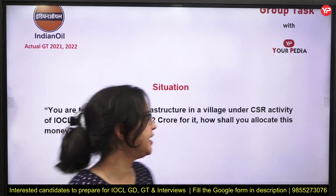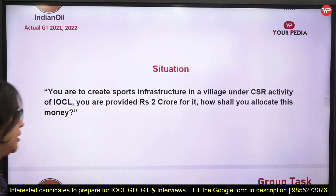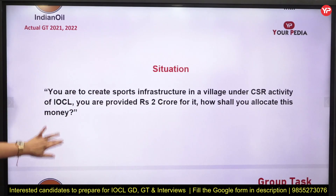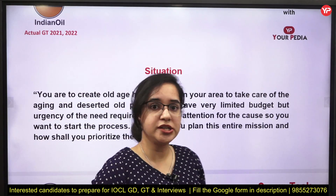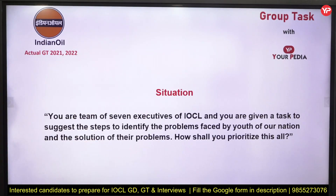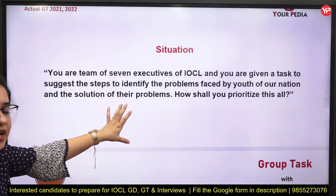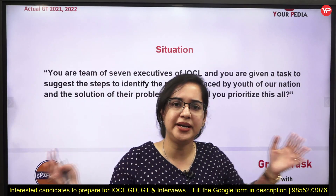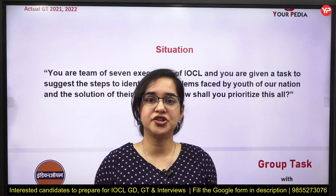For example: create sports infrastructure in a village under IOCL's CSR activity with a budget of 2 crore rupees — how shall you allocate the money? Next, you are to create an old age home facility. Or your team of seven executives is given a task to identify the problems being faced by the youth of the nation and prioritize them — because you can't give a list of 20 things; the purpose is to give an efficiently prioritized list of key things.